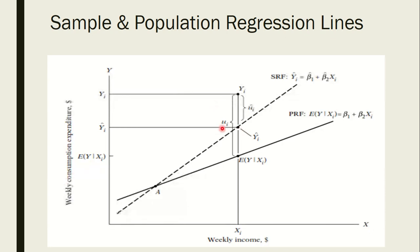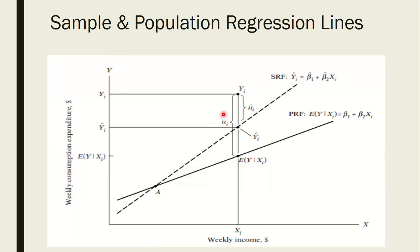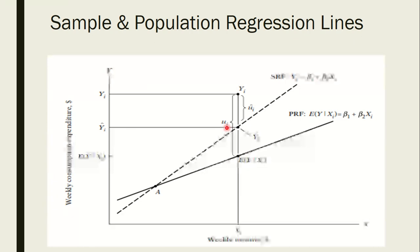So these two parts — mu_i hat, which is the difference between actual y and the expected value of y for the sample, and the distance between the sampling and population regression lines — together equal the population error term mu_i.